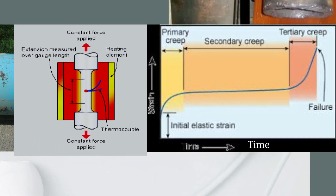Creep is represented in a graph with respect to strain and time. In the initial elastic region nothing happens, but after a certain strain the material undergoes primary creep, secondary creep, and tertiary creep. The time duration in the secondary creep is much higher than in the primary and tertiary stages, and at the end the material completely breaks. This graph is formed while stretching a heated object with a constant force in both directions.